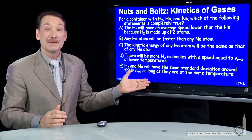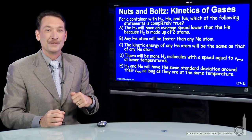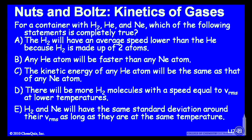We'll look at five statements and try to determine which is exactly true. Statement A: the hydrogen will have an average speed lower than the helium because hydrogen is made up of two atoms. B: any helium atom will be faster than any neon atom. C: the kinetic energy of any helium atom will be the same as that of any neon atom. D: there will be more hydrogen molecules with a speed equal to the root mean square speed at lower temperatures. And E: hydrogen and helium will have the same standard deviation around their root mean squared velocity as long as they're at the same temperature.